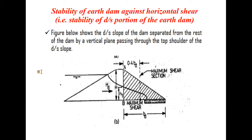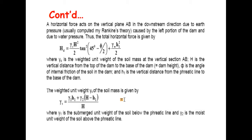The next topic is stability of earth's dam against horizontal shear — stability of the downstream portion of the earth dam. The figure shows the downstream slope of the dam separated from the rest by a vertical plane passing through the top shoulder of the downstream slope. The maximum section occurs at a horizontal distance of 0.4 times BD from the downstream tip of the top width. A horizontal force acts on the vertical plane AB.